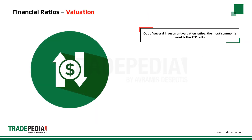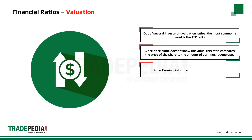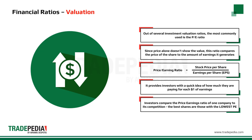On the valuation side, out of several investment valuation ratios, the most commonly used is the P/E ratio. Since the price alone doesn't show the value, this ratio compares the price of the company's share to the amount of earnings it generates. This ratio is calculated by dividing the price per share by the earnings generated per share. It provides investors with a quick idea of how much they are paying for each one dollar of earnings.